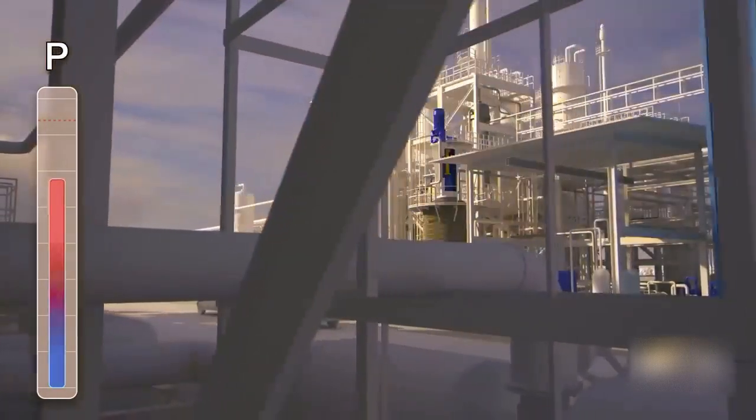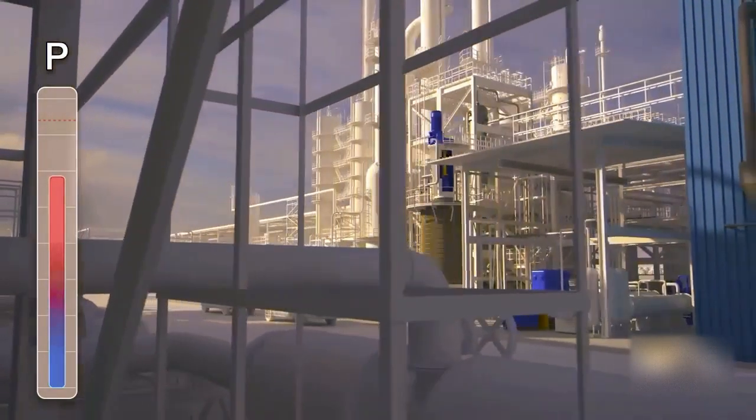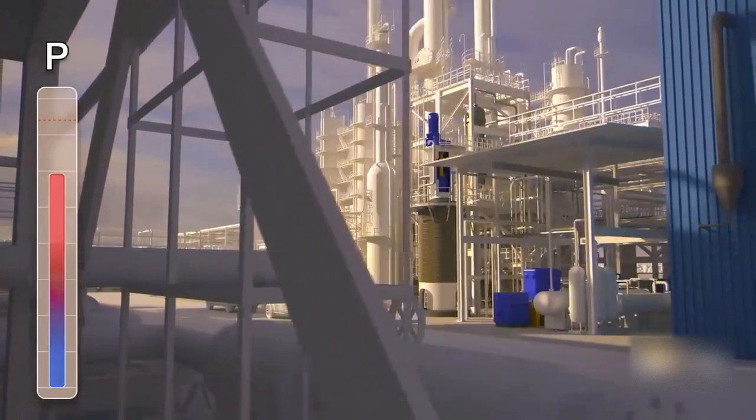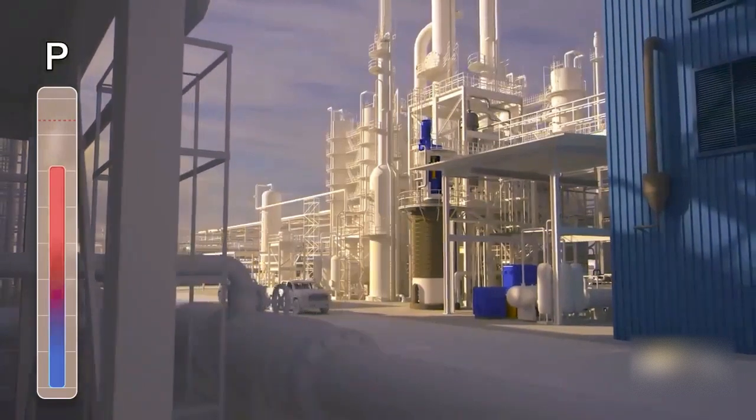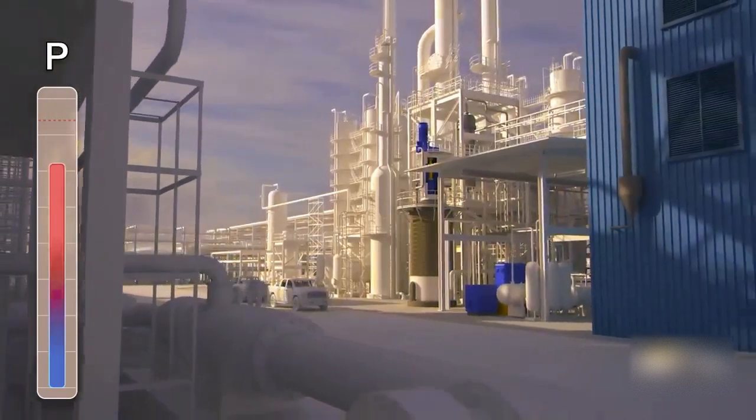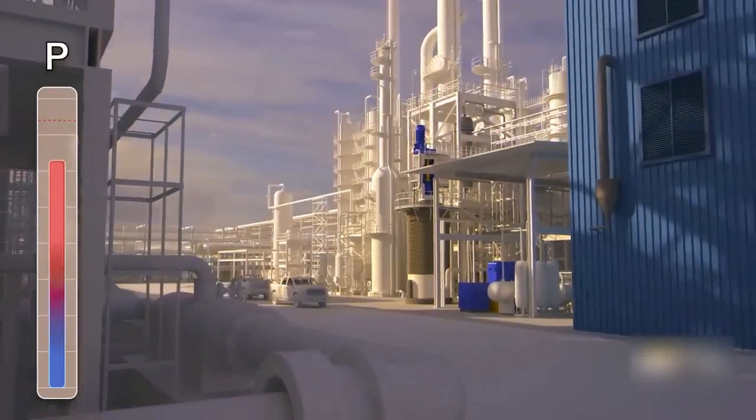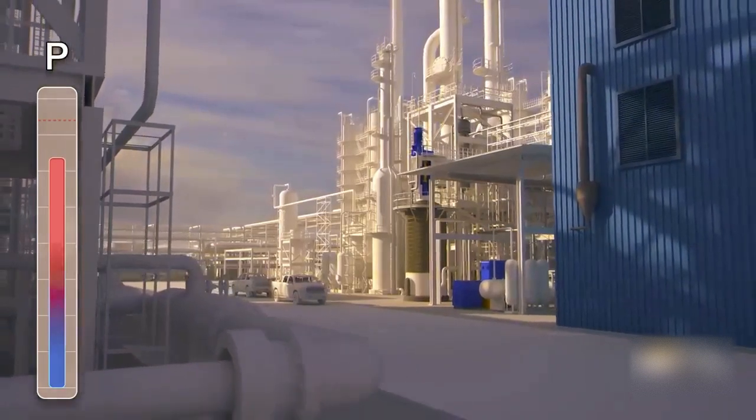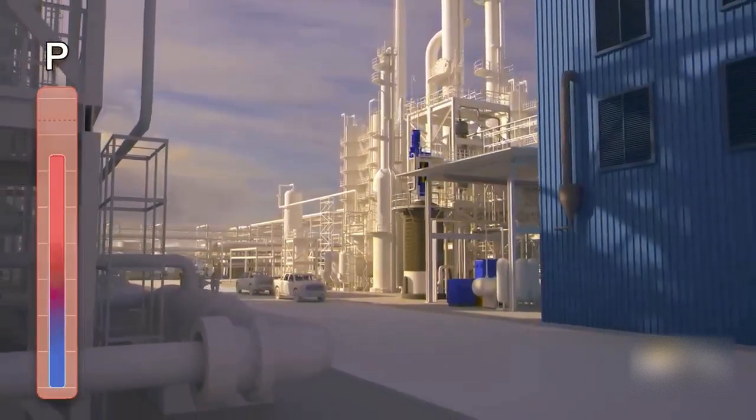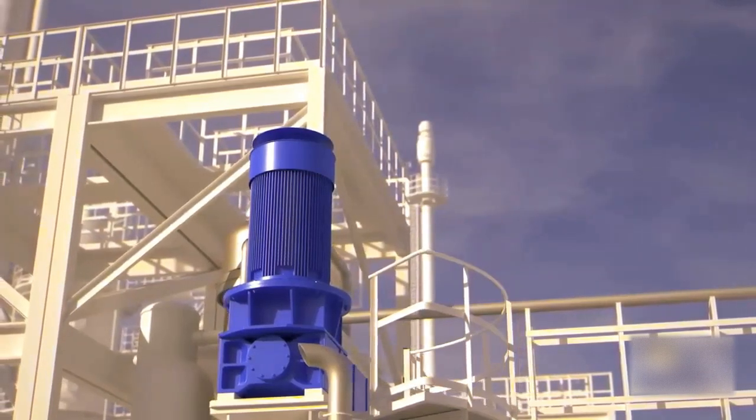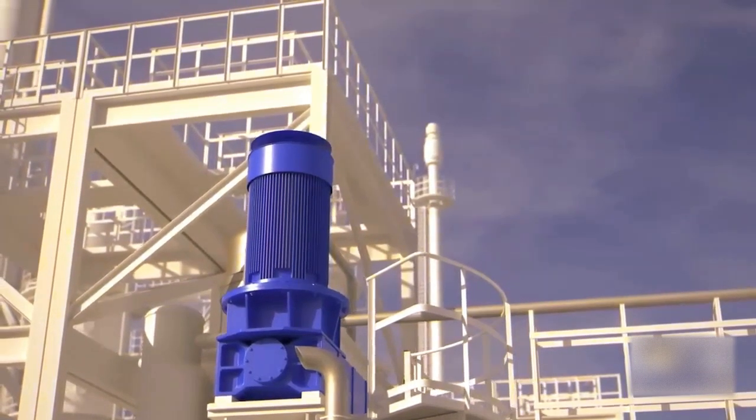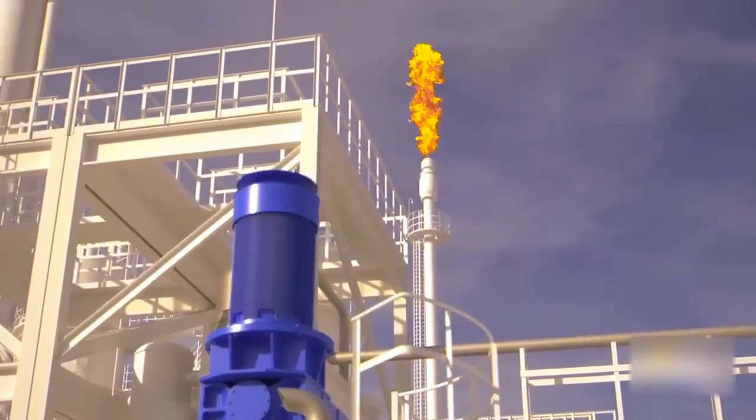By about 8:45 a.m., the reactor reached the target operating pressure of nearly 600 PSI, but pressure continued to increase. Around 9 a.m., the pressure reached 640 PSI, and the high pressure alarm went off. A board operator responded by periodically opening a pressure control valve to send some of the vapor inside the reactor to a flare.